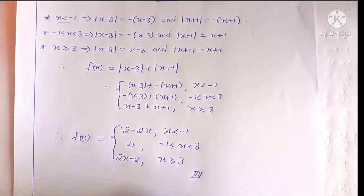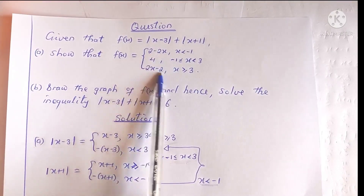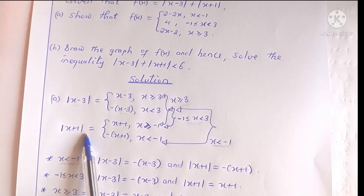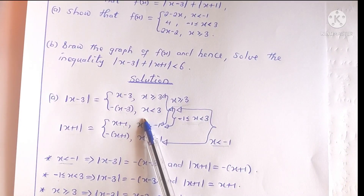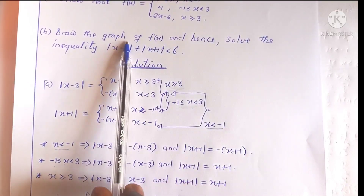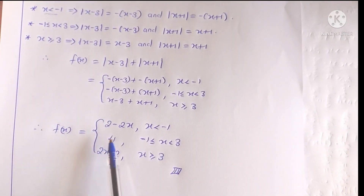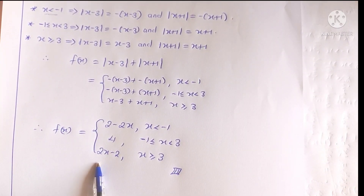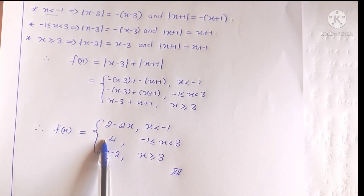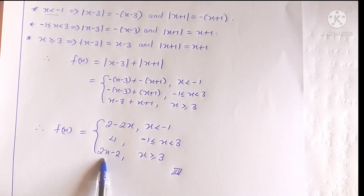To express an absolute value function as a piecewise defined function, we define the absolute value functions properly and then take the intersections. Now for the second part, we draw the graph of f of x. Looking at this function, the three branches are all linear. The first branch is a straight line starting from x equal to negative 1 downwards. The second branch is the horizontal line y equal to 4 from x equal to negative 1 up to x equal to 3. The third branch is the line 2x minus 2 starting from x equal to 3 upwards.